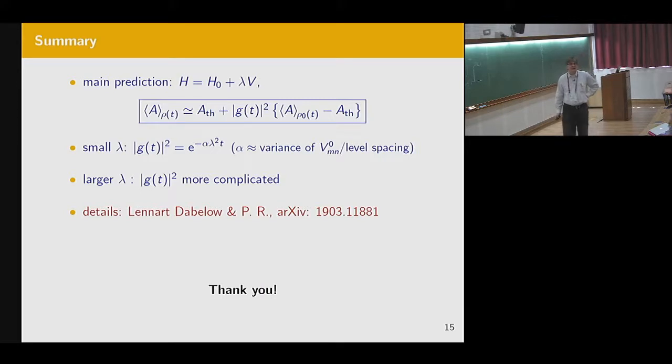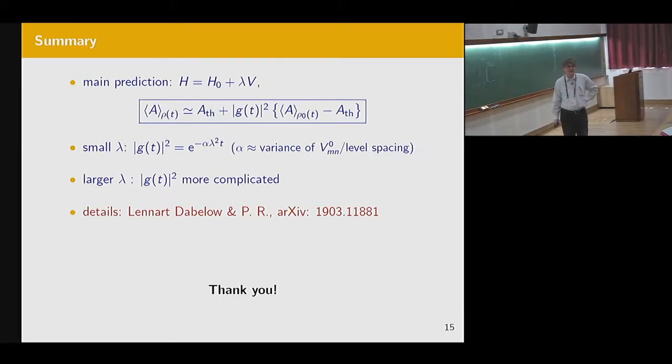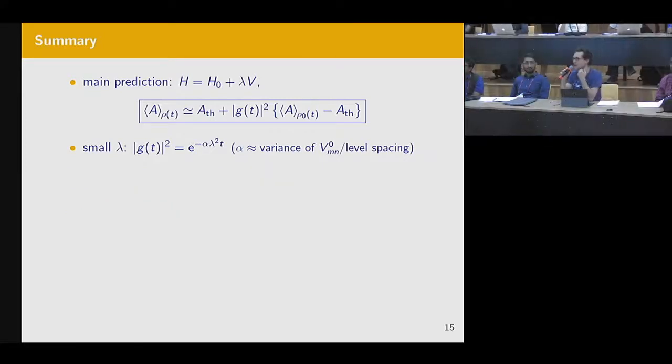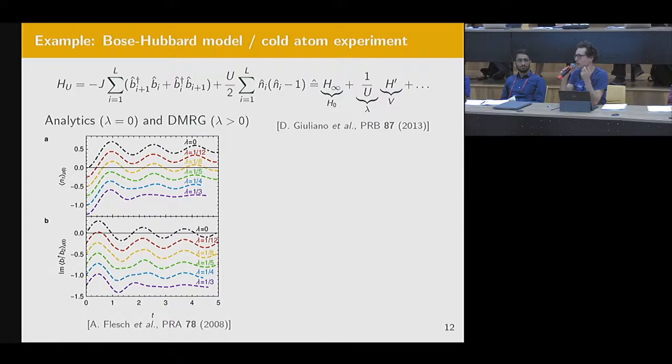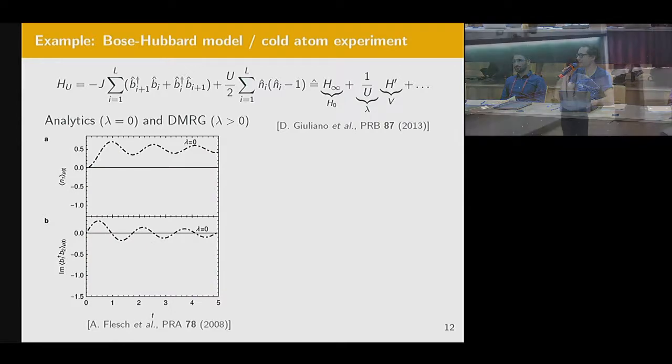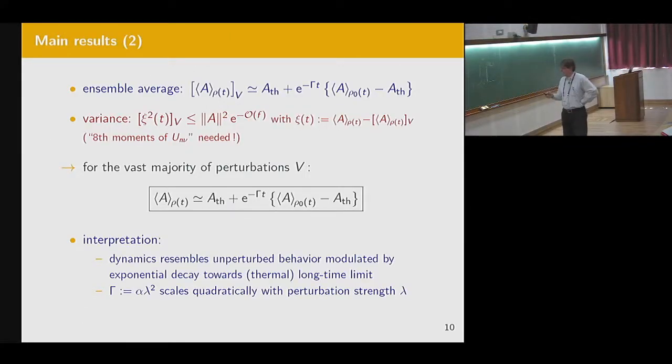Thanks, Peter, for the beautiful talk. One thing that I really don't understand is how it's possible that there is a pure exponential form there. And let me tell you why I don't understand that. Because the intuition from Fermi-Golden rule says that alpha times lambda squared is, of course, what we call the Fermi-Golden rule rate. But that Fermi-Golden rule rate, of course, depends on the state that you are in. And as the conserved quantities of H0, as that changes slowly during relaxation, the Fermi-Golden rule rate should also change. I don't know whether it makes sense with that. But that's why I just cannot wrap my head around that.